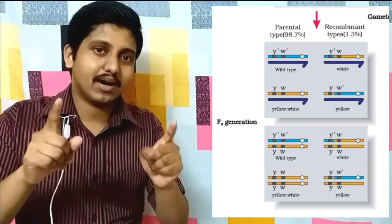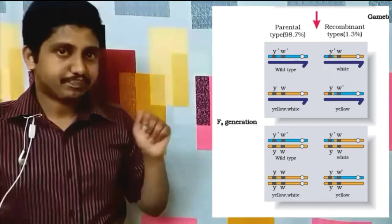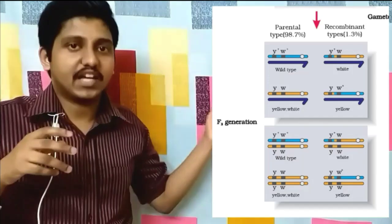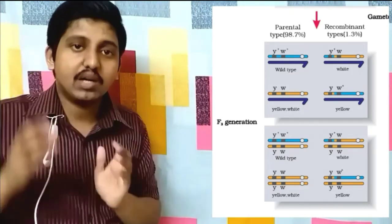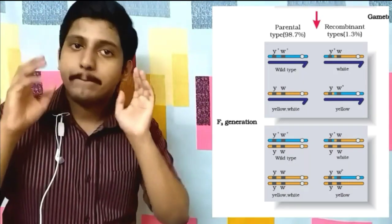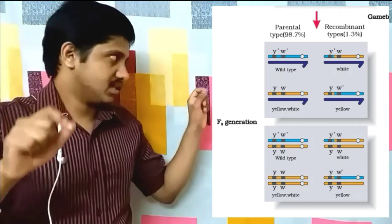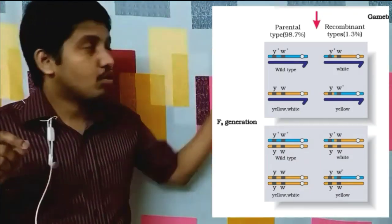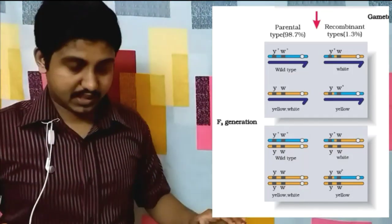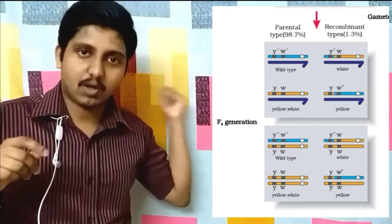In the F2 progeny, linkage became evident. Most individuals were of the parental characteristic type — both male and female — while only a very small percentage, just 1.3%, were of the new recombinant type with non-parental characteristics. Morgan explained why this difference occurred using the concept of linkage.